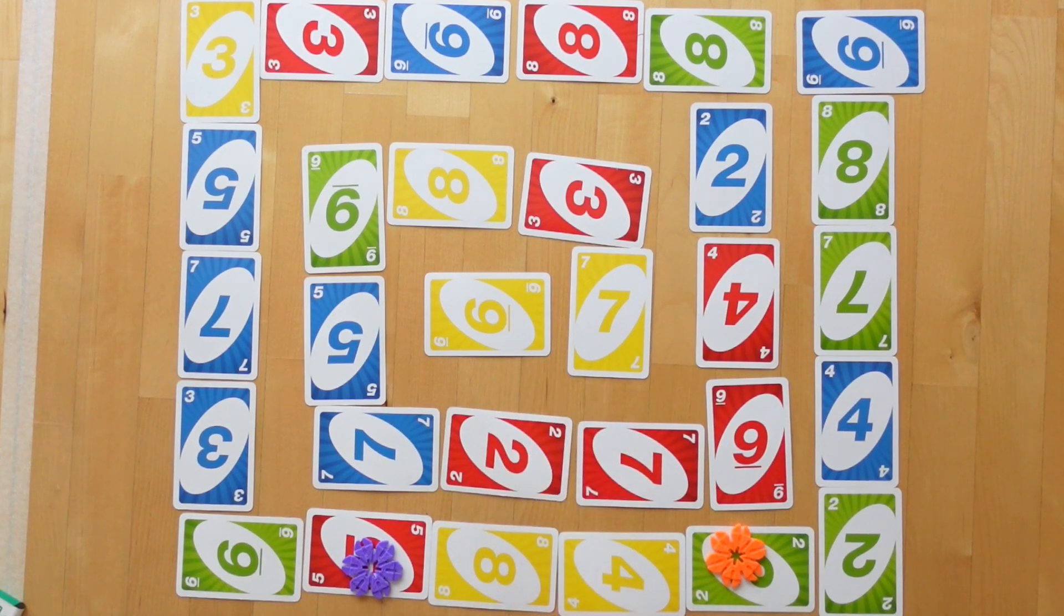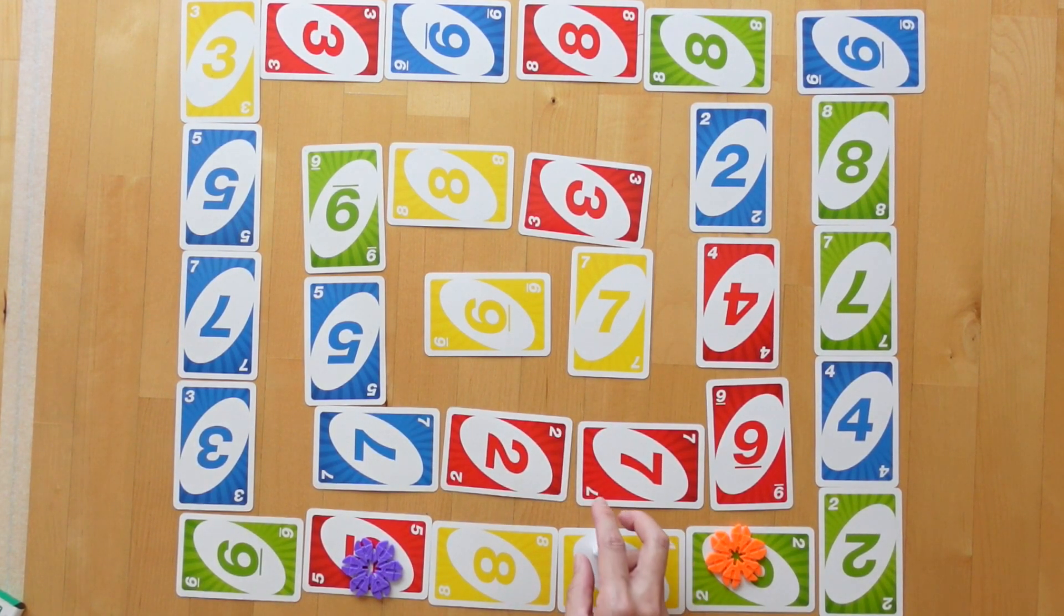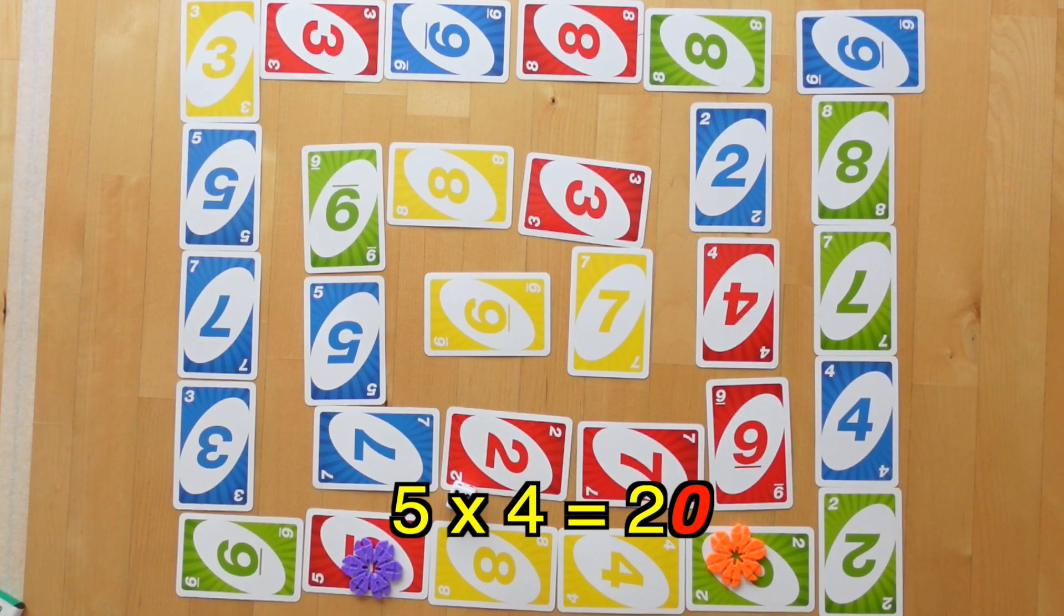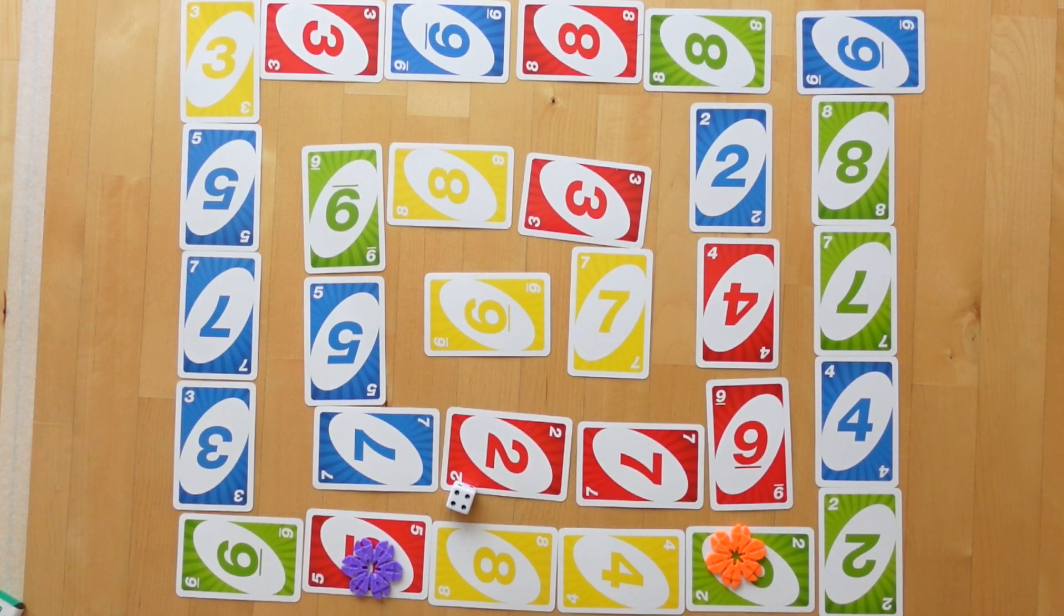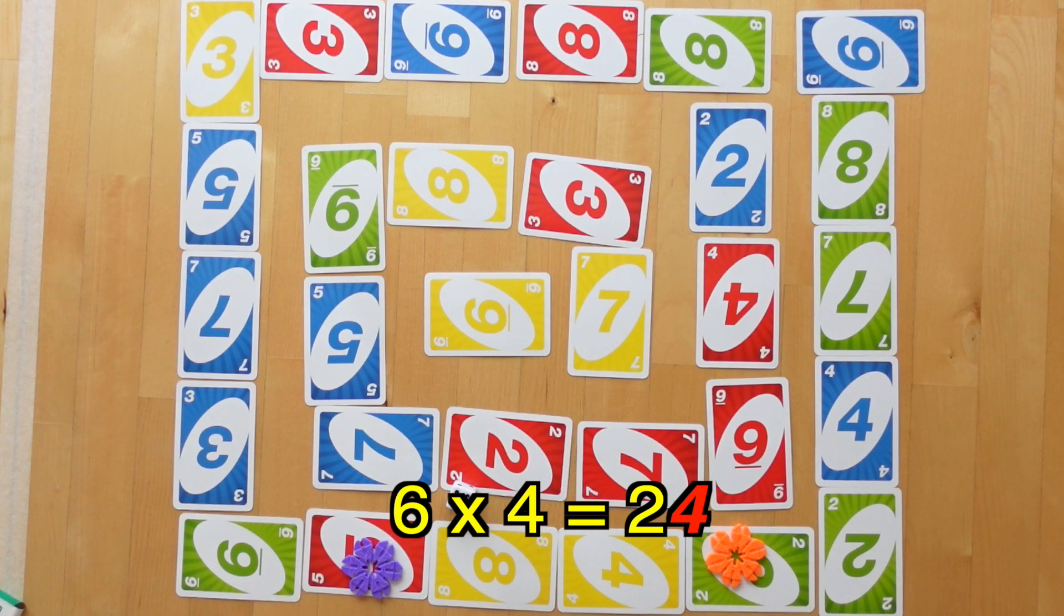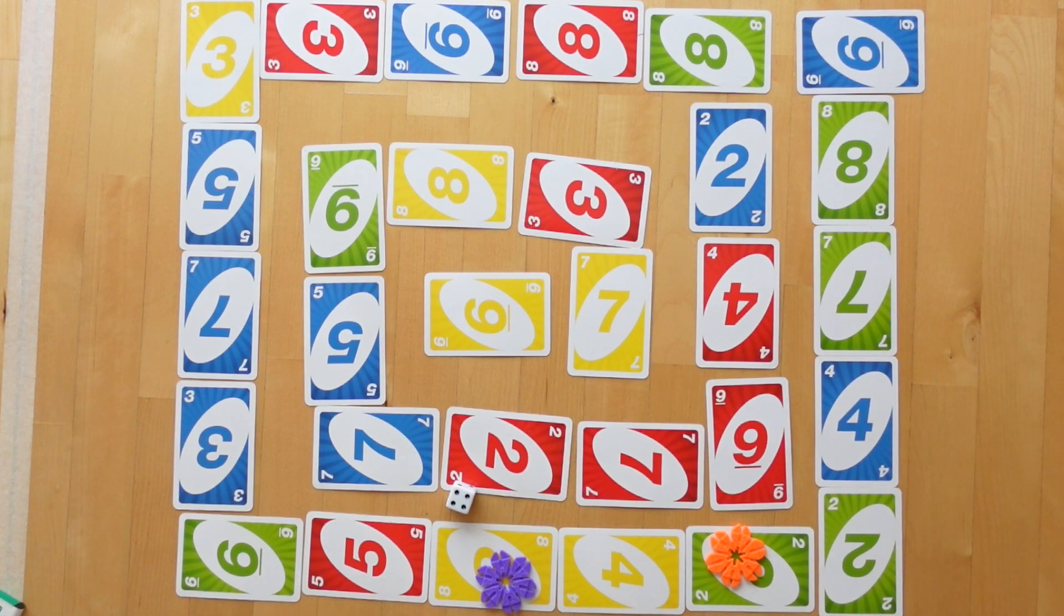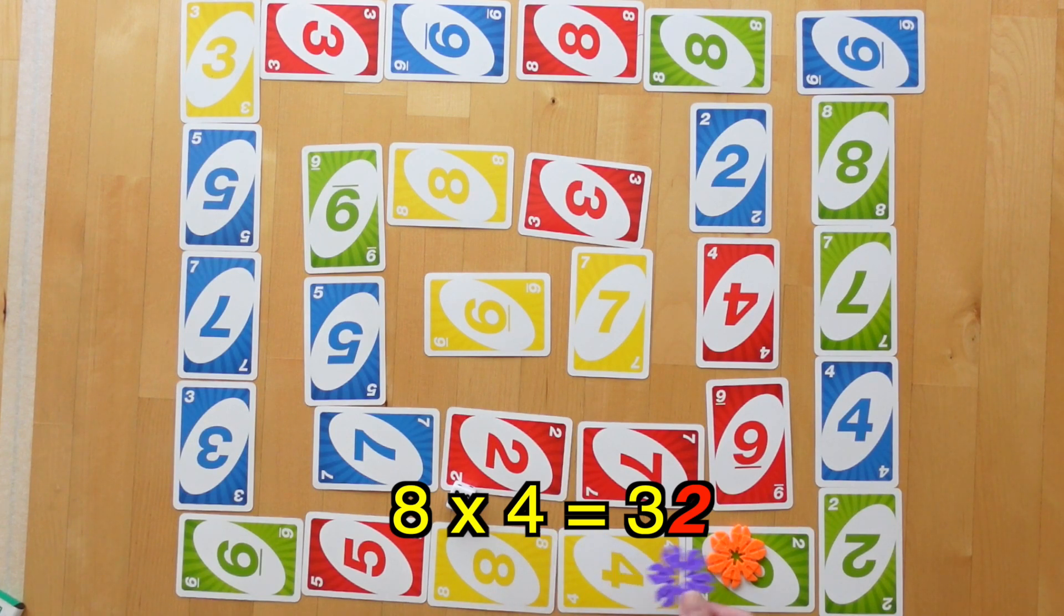Purple player has rolled a 4. So 6 times 4 is 24. 5 times 4 is 20. And 8 times 4 is 32. So she could move 2 spaces up here or move 4 spaces from 6. They both come up to the same, so she's just going to start at 8 and move up 2 spaces. 8 times 4 is 32. 1, 2 spaces.